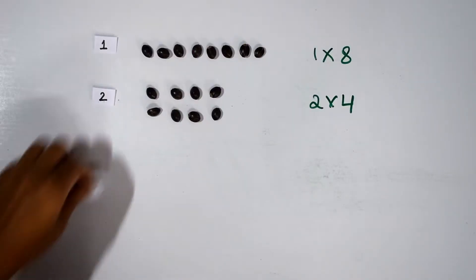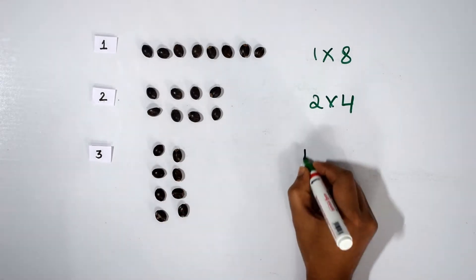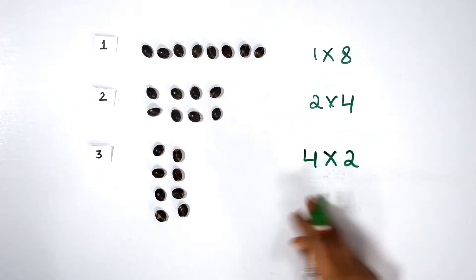In the third case, she arranges them in this way. This has one, two, three, four rows and two columns, hence can be written as four times two.